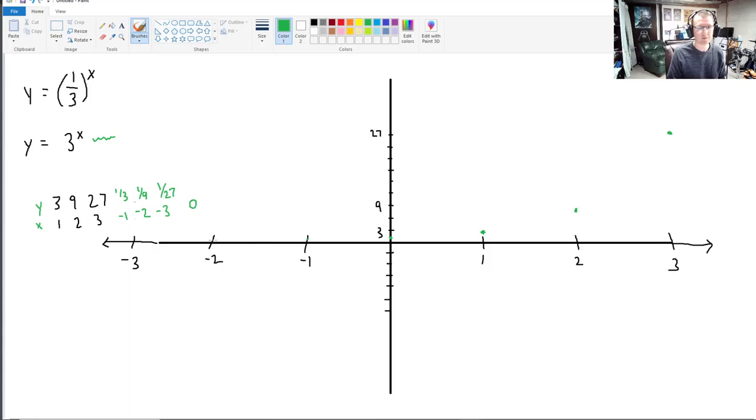Negative 2, we get 1 ninth, which is even lower. And over here, we get 1 27th, which is really, really close to the x-axis. So now we have the unfortunate problem of graphing this. I'm going to use a straight line to graph this because it's pretty close to a straight line. And then I'm going to freehand the rest of this. And it keeps curving up faster and faster and faster. And over here, it's just getting closer and closer to the x-axis. So that is 3 to the x.